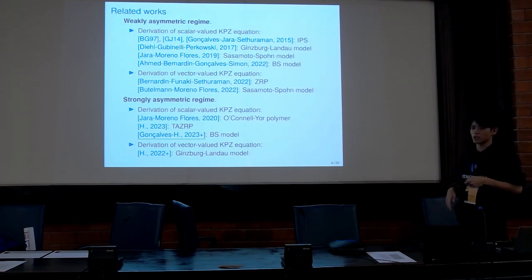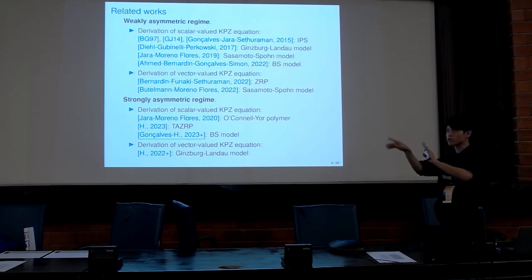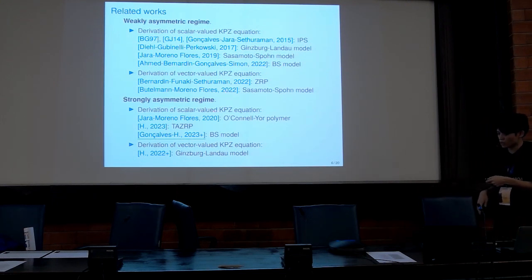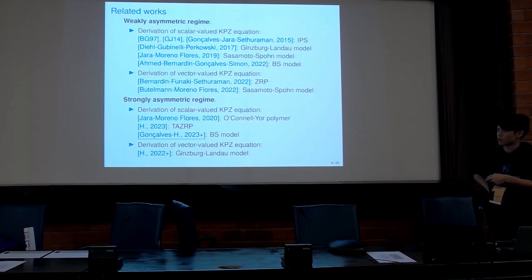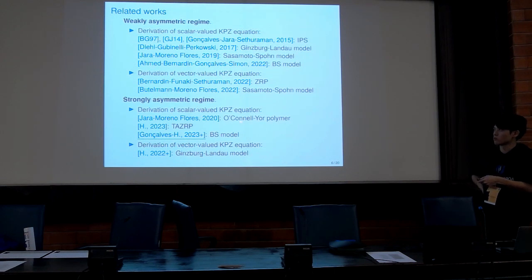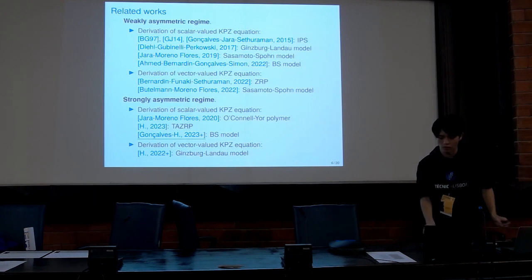It turns out there is another regime from which the KPZ equation can also be derived, called the strongly asymmetric regime. In this regime, for example, I proved that from the totally asymmetric zero-range process, where particles jump only in one direction, we could derive the equation via scaling limits. This regime was first studied by Milton-Hara and Gregorio Moreno-Flores via the O'Connor-Yor polymer model, and I have written three papers on this regime. Today I will talk about the Bernhard-Stokes model from this point on.